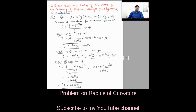In Cartesian form, the radius of curvature is given by: rho = (1 + y1²)^(3/2) / y2, where y1 is the first order derivative and y2 is the second order derivative. Name that as equation star.